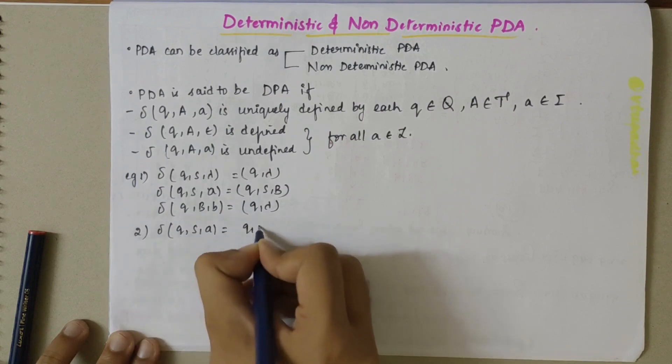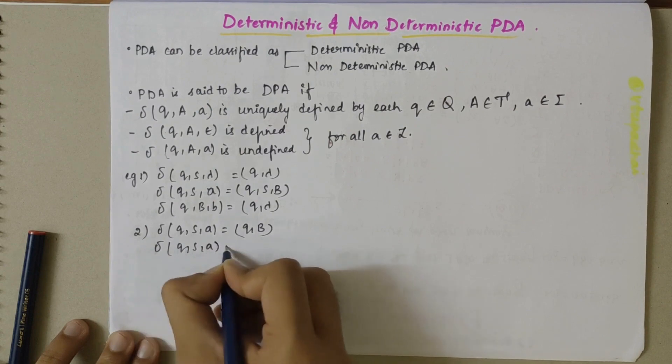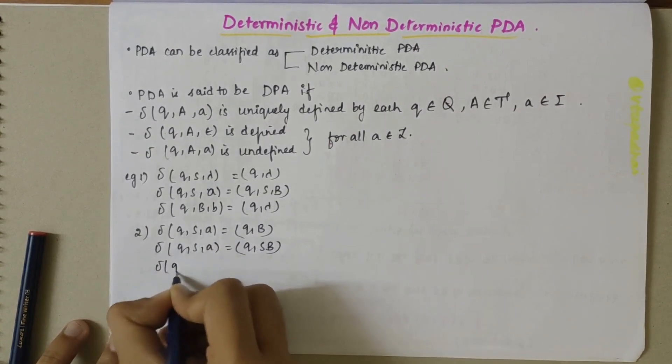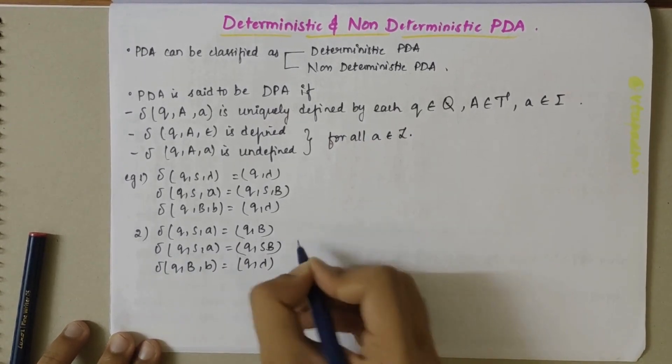Transition of Q, S, B transition of Q, S, A, I have Q and B. Transition of Q, S, A I have Q and S, B. Transition of Q, B and B I get Q, Lambda.